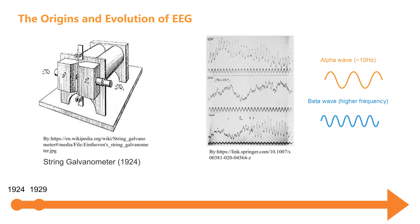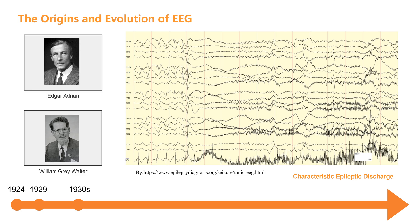In 1929, Berger published this discovery officially. However, the scientific community initially did not recognize his work, and this breakthrough was underestimated for a long time. It wasn't until the 1930s that EEG technology began to gain wider recognition. British neurophysiologist Edgar Adrian improved the experimental equipment and successfully verified the brainwave patterns discovered by Berger, finally establishing EEG in the scientific community.